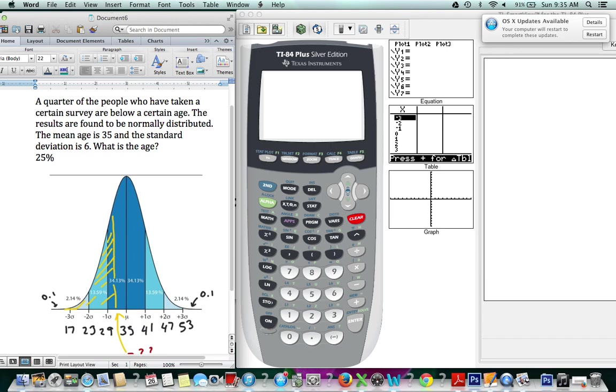So when we add up 0.1 to 2.14, we get 2.24, and then we add up the 13.56 to what we already have, and that sums up to 15-point-something. So we're trying to get to 25%, and the next number up is 34.14.